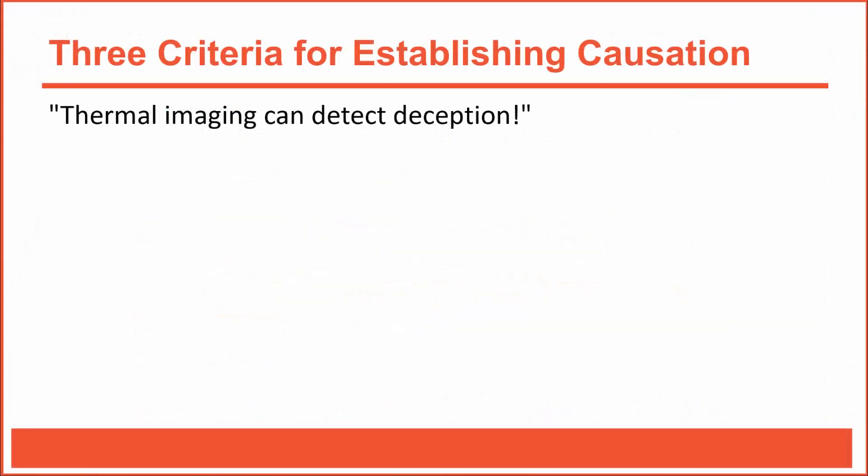Before assessing the three criteria for establishing causation, let's rephrase this claim so that it better fits the format of our questions. As we learned from the abstract, the researchers created a situation where half the subjects were thieves and half were innocent suspects. During an interrogation, thieves were instructed to deny their involvement in the theft — in other words, thieves lied during the interrogation, while innocent suspects told the truth. The researchers used thermal imaging in an attempt to distinguish between thieves, who were lying, and innocent suspects, who were telling the truth.